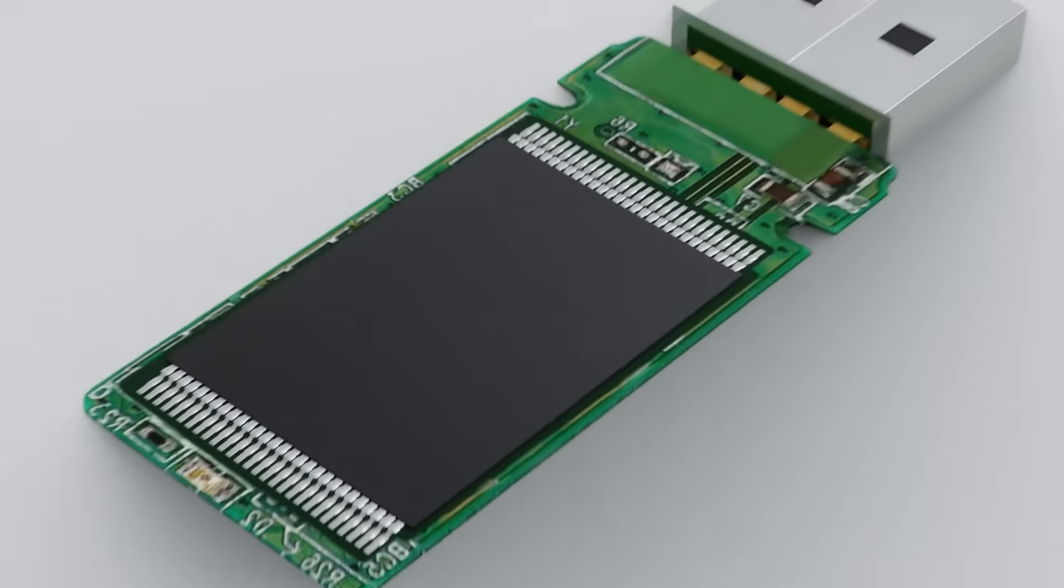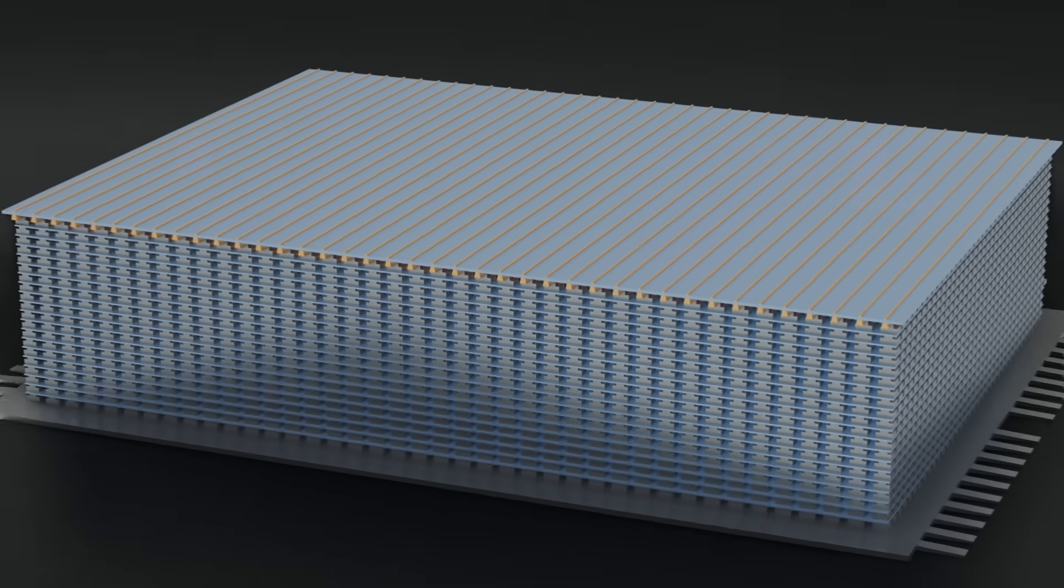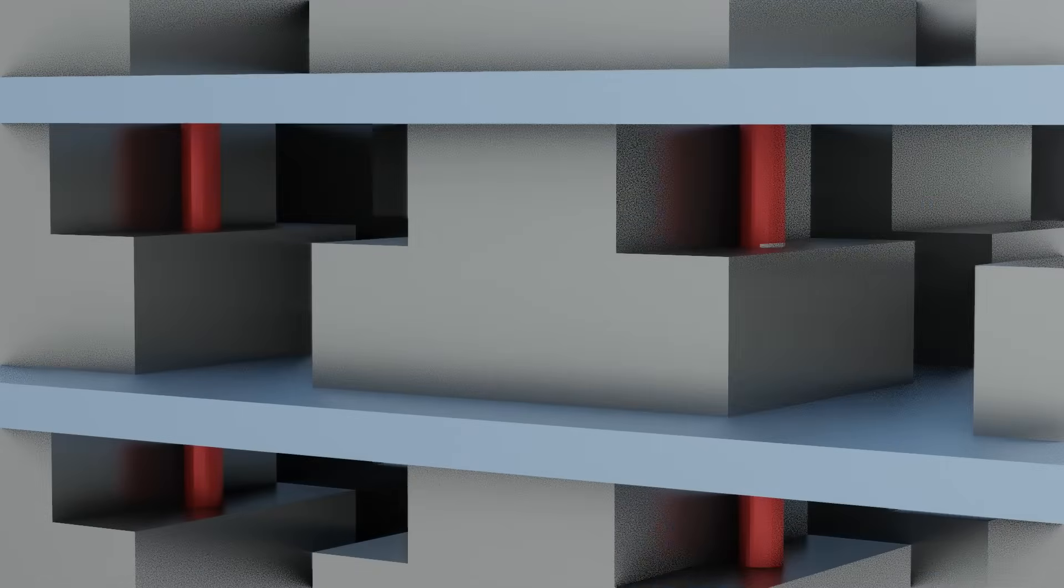Now let's dive into the NAND flash memory chip. It is made of billions of tiny floating gate MOSFET transistors that store charge and thus enable data storage.